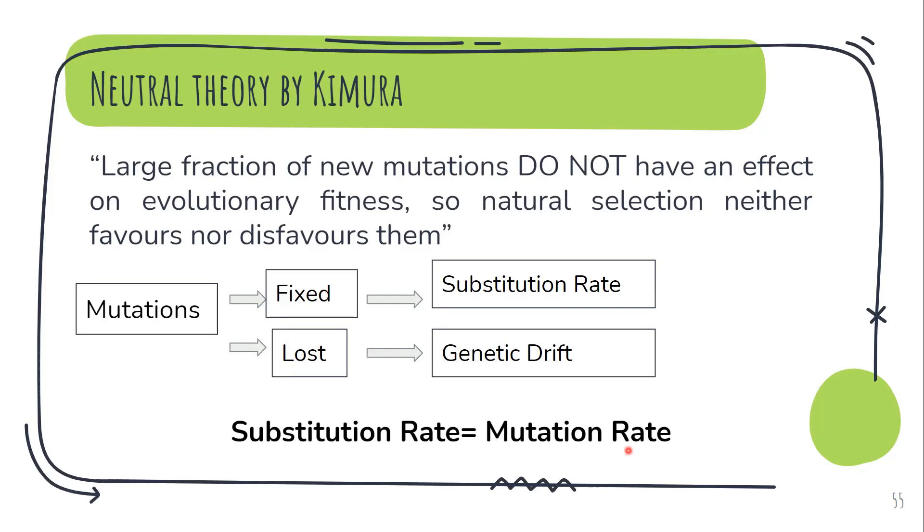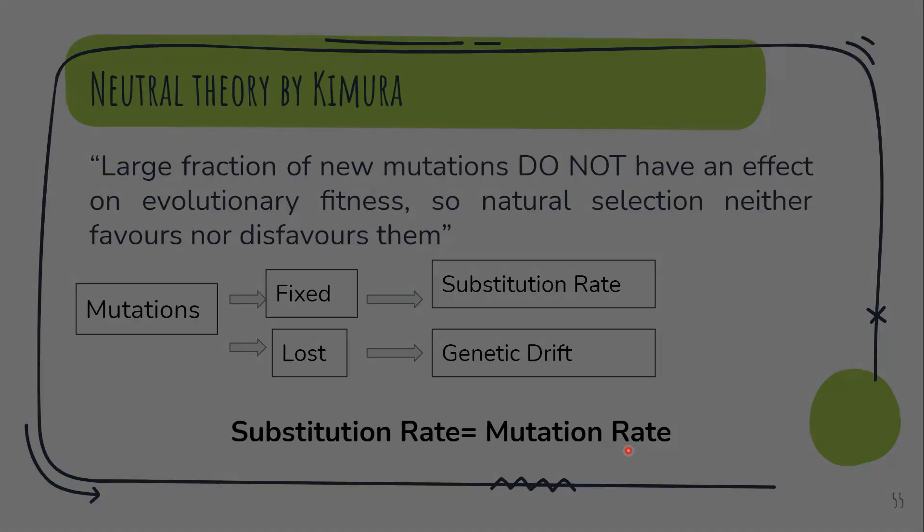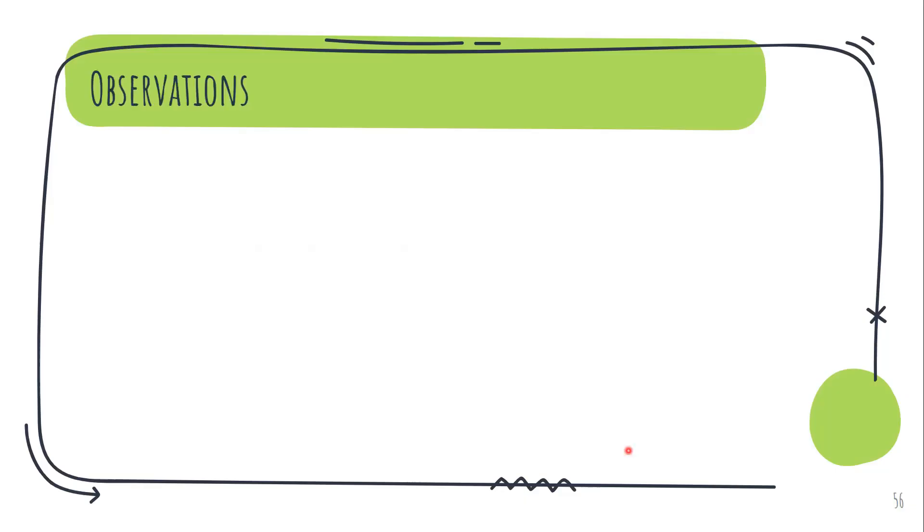Now this is true provided that the mutation rate remains constant across species. Now what are the observations of the Kimura theory or what are the conclusions that we can draw or the evidences that support this neutral theory?